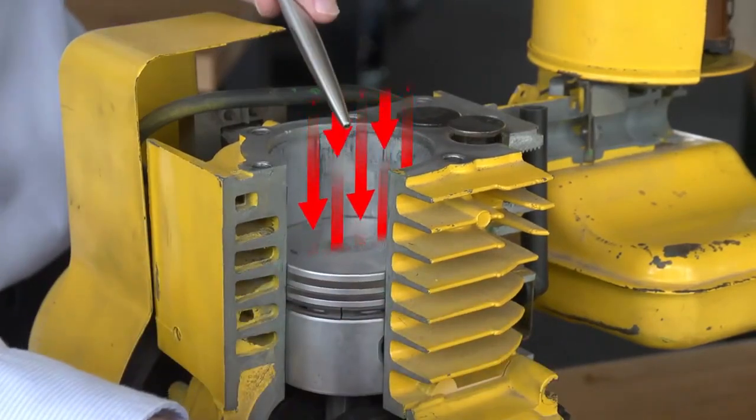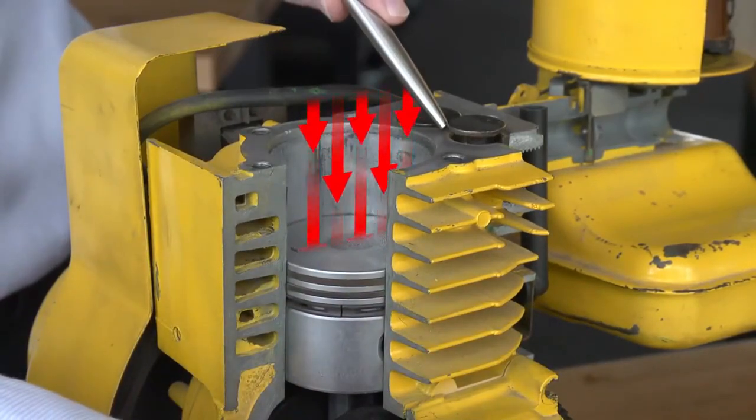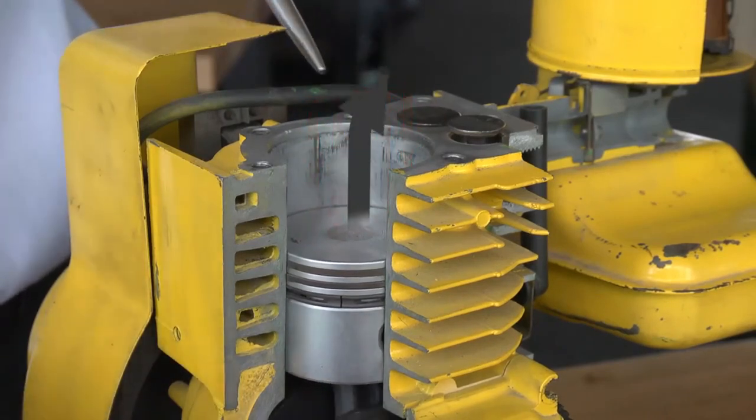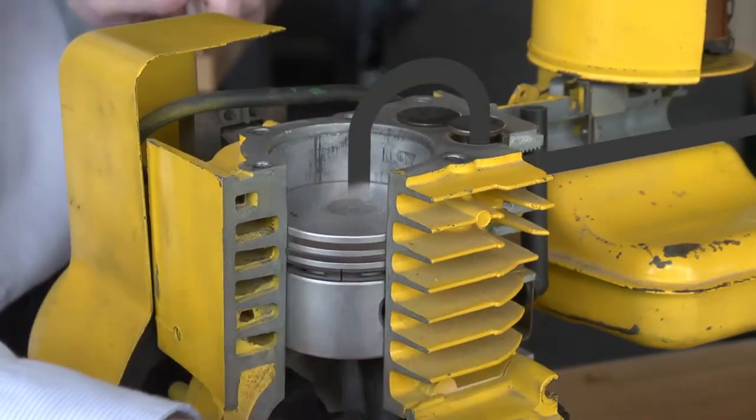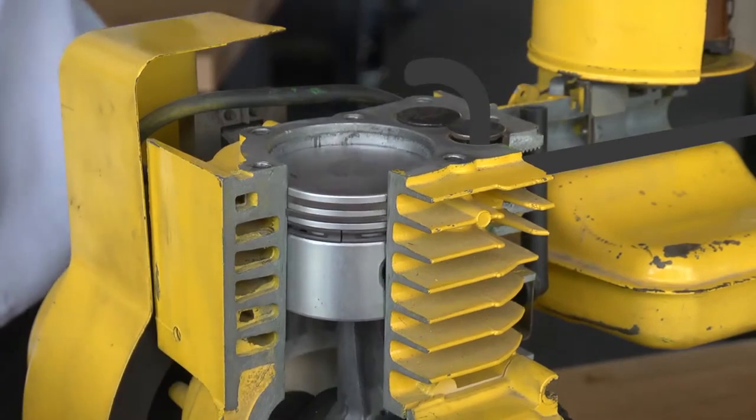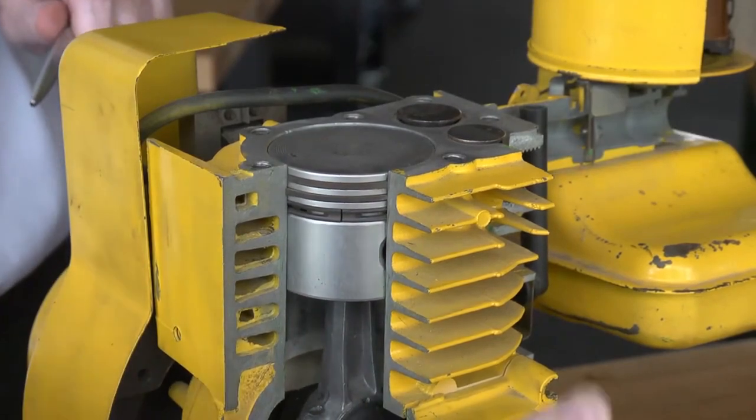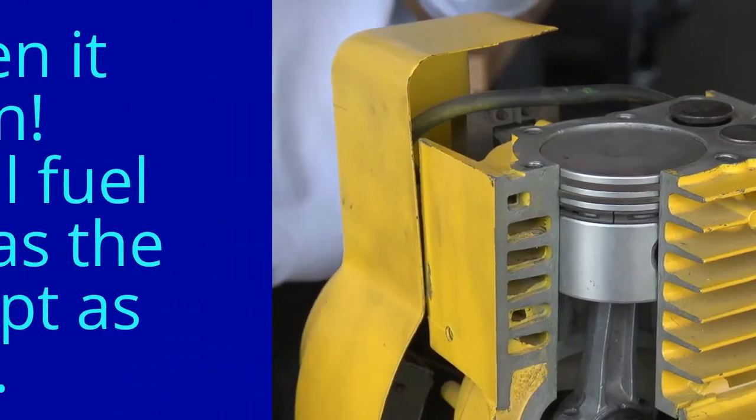At the bottom of the stroke, the exhaust valve starts to open and we get the final stroke, which is the exhaust stroke, where the air-fuel mixture is expelled out through the exhaust system. Then we're ready for the next intake stroke.